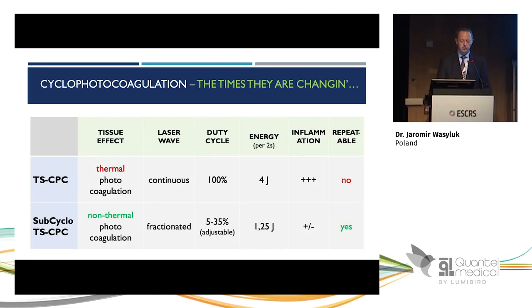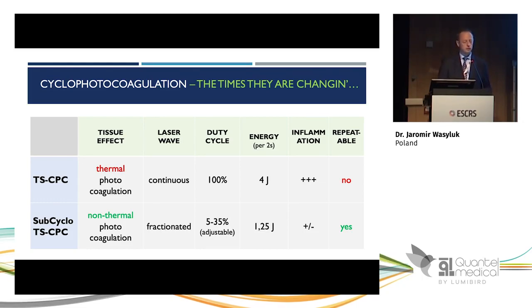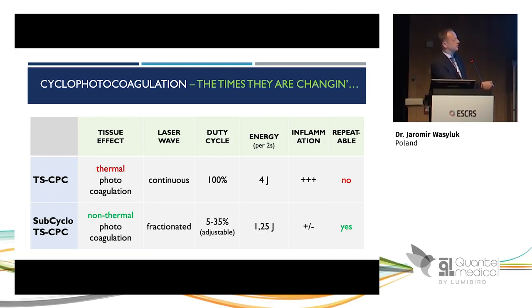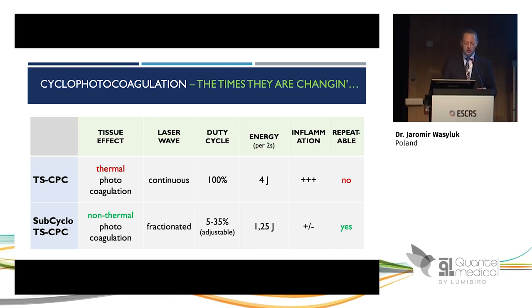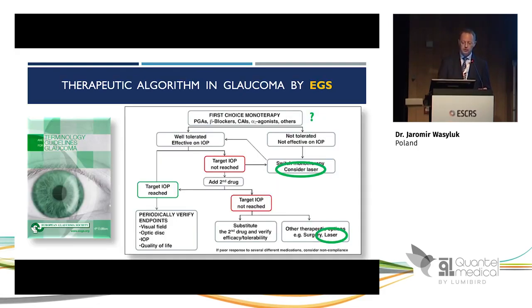This table summarizes the main differences between TCPC and SubCycle. The key difference is that TCPC is thermal and photocoagulates tissue, while SubCycle is a non-thermal therapy. The wave delivery is continuous in TCPC and fractionated in SubCycle. Inflammation is usually present with TCPC but is variable with SubCycle. TCPC cannot be repeated due to thermal destruction, while SubCycle can usually be repeated with success.